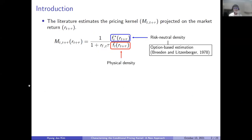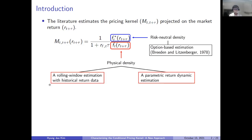The pricing kernel is formally defined as the ratio of the risk-neutral density to the physical density. The literature usually estimates the pricing kernel projected on the market return because it is not easy to find the joint density functions of other state variables. We can estimate the risk-neutral density using a large cross-section of options data by following Breeden and Lichtenberger. For the physical density estimation, there are two common approaches: a rolling window estimation with historical return data and a parametric return dynamic estimation.